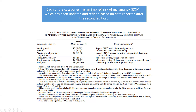Suspicious for malignancy carries a 74% risk of malignancy, with a range of 67 to 83%. Management includes molecular testing, lobectomy, or near-total thyroidectomy. Malignant (category 6) has a 97% risk of malignancy, with a range of 97 to 100%, and management is lobectomy or near-total thyroidectomy.